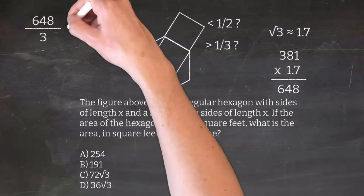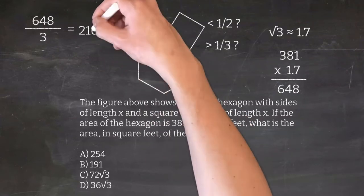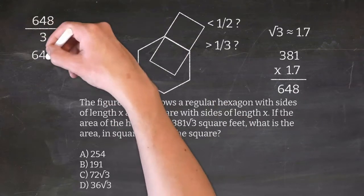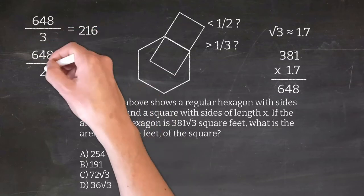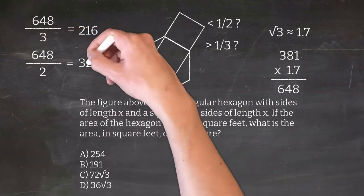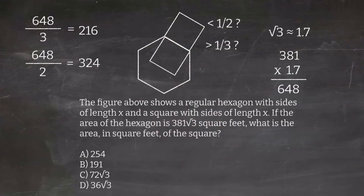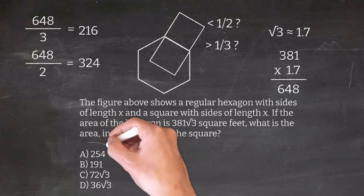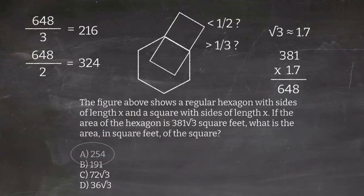And if I take the 648 and divide by 2, I'll get 324 for a high end of the range of values. So if our estimations are reasonable, we should get a range of values of 216 to 324. We look at our answers, and only one answer falls within that range of values. And that is in fact the right answer. Next question, please.